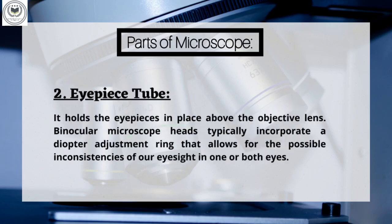Part 2: Eyepiece Tube. It holds the eyepieces in place above the objective lens. Binocular microscope heads typically incorporate a diopter adjustment ring that allows for the possible inconsistencies of our eyesight in one or both eyes.